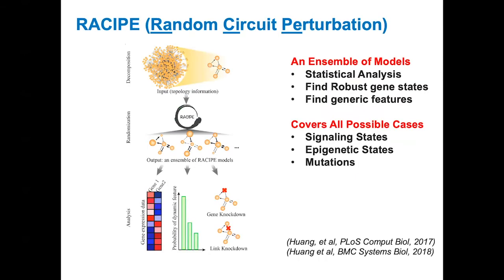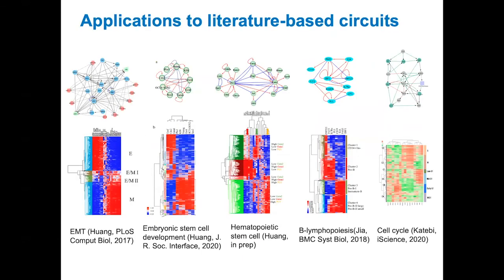To address this parameter issue, we developed a new method called Random Circuit Perturbation, or RECIPE. Unlike the traditional approach where we focus on a fixed parameter set, here in RECIPE we generate a sample of models with random kinetic parameters. We then use numerical methods to analyze the dynamics of each model in a high-throughput way so that we can perform statistical analysis on the models to find the most robust behaviors. So far, we have applied RECIPE to several literature-based circuits. In each case, we generate an ensemble of 10,000 models, from which we identify robust clusters that can be associated with biologically relevant cellular states. RECIPE needs only circuit topology as input and unbiasedly predicts these cellular states from an ensemble of random models.